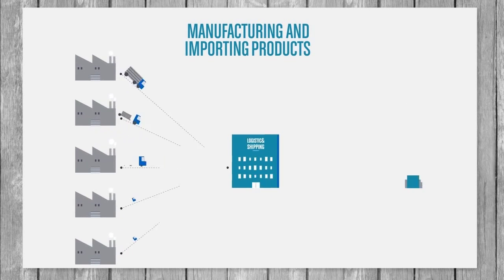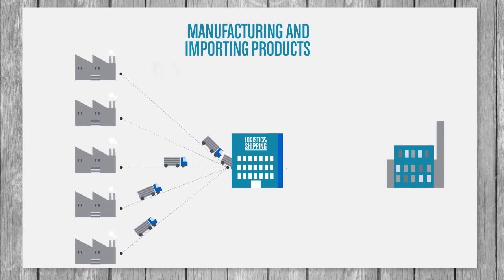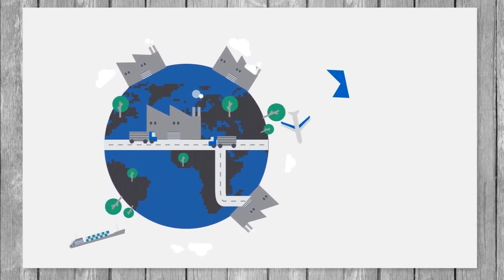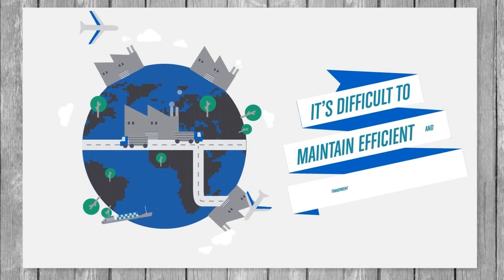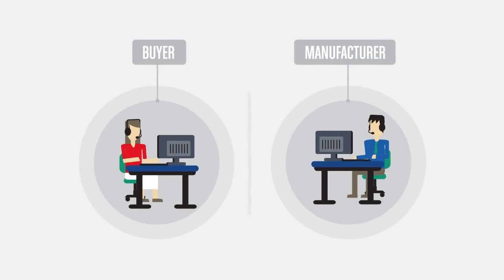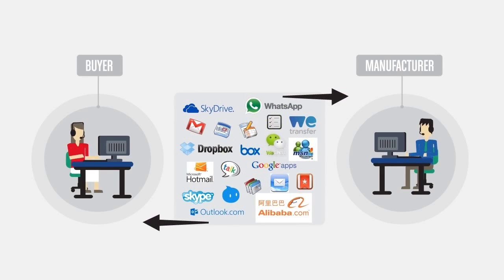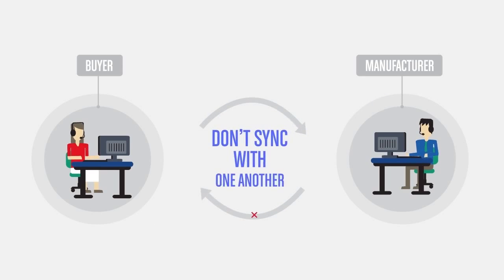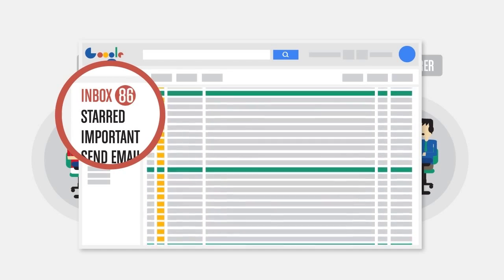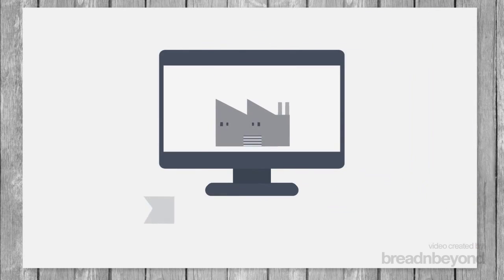Manufacturing and importing products for multiple suppliers is not an easy process. And because of the global nature of today's business, it's difficult to maintain efficient and transparent workflows. Buyers and manufacturers use a number of fragmented communication and file-sharing applications that don't sync with one another, and sifting through endless and cluttered email threads wastes time, creates misunderstandings, and strains relationships.